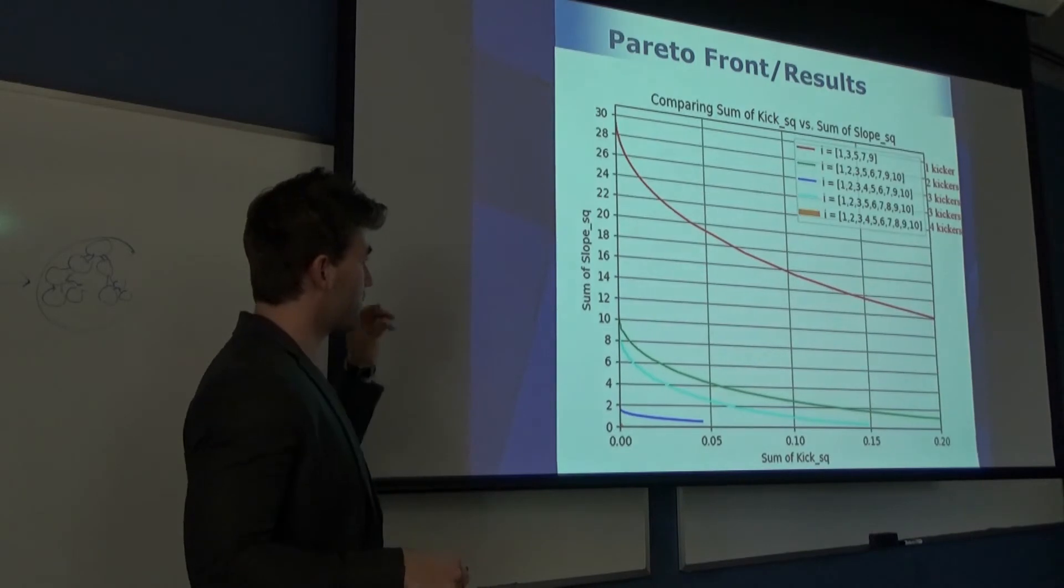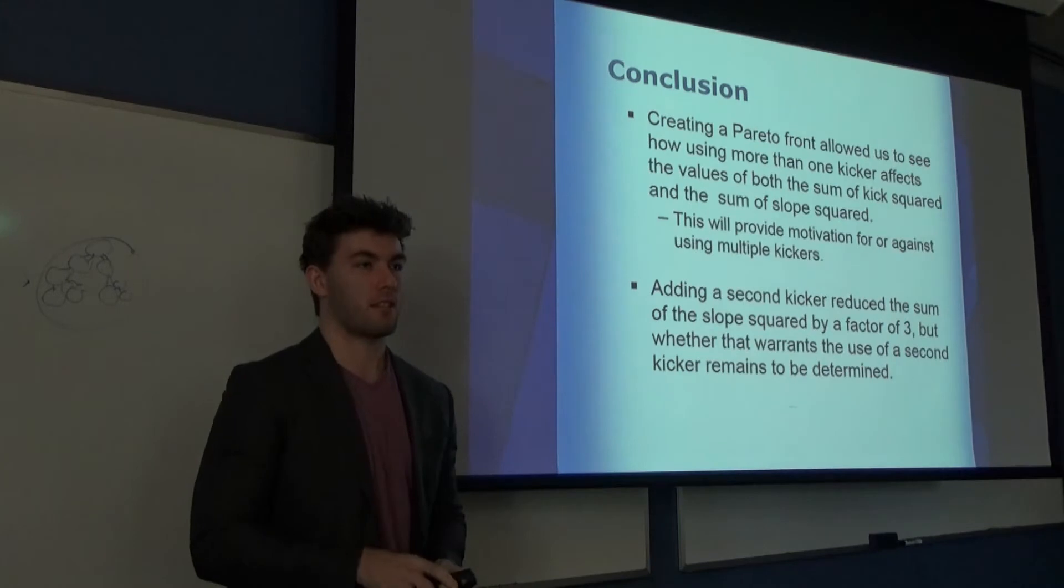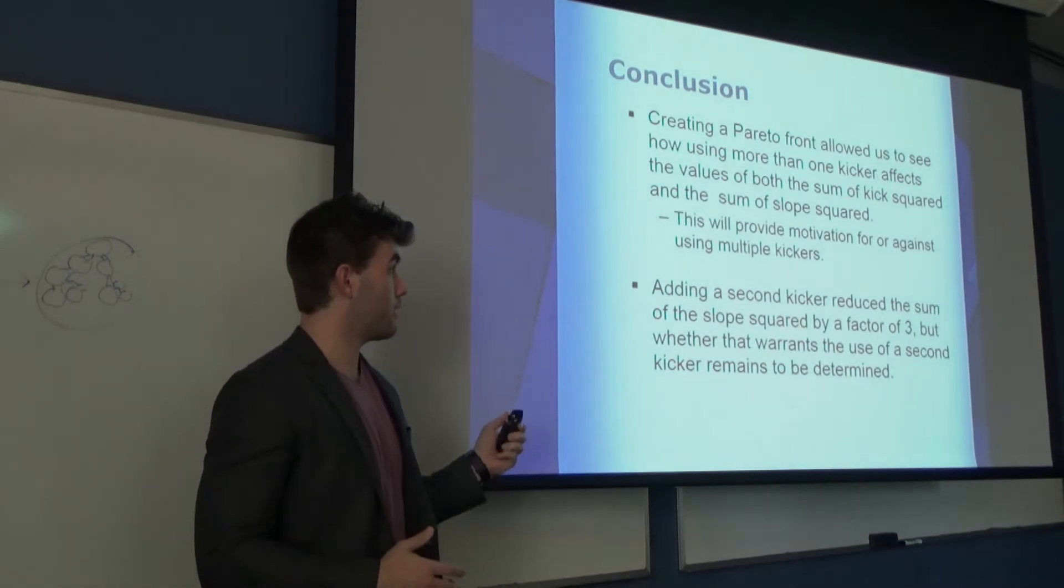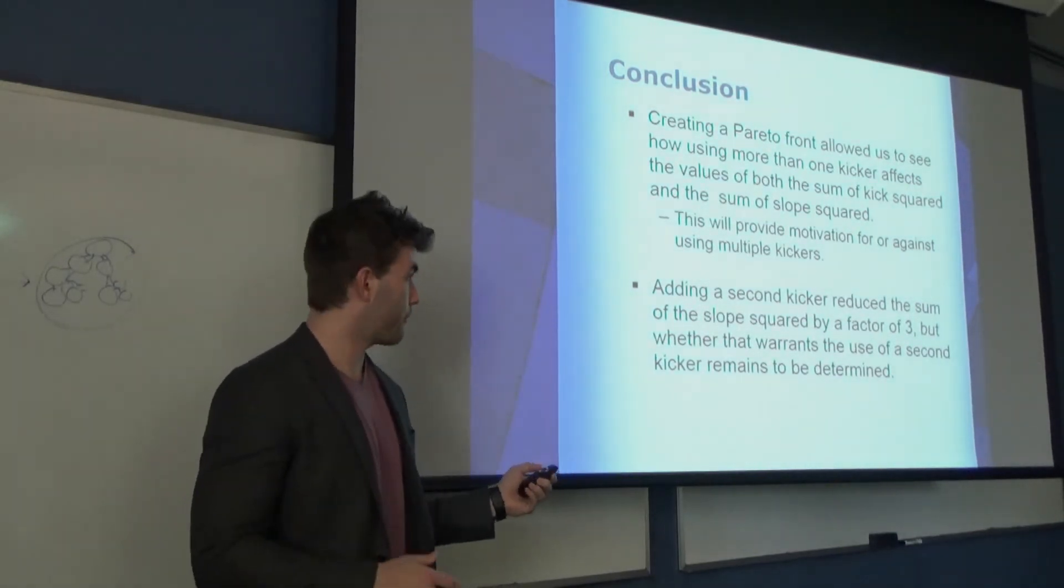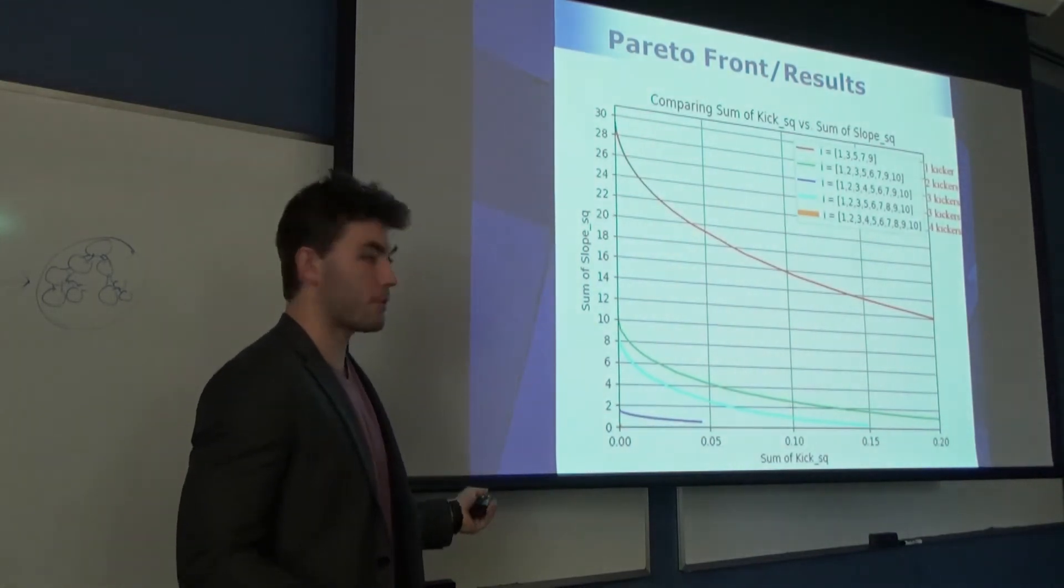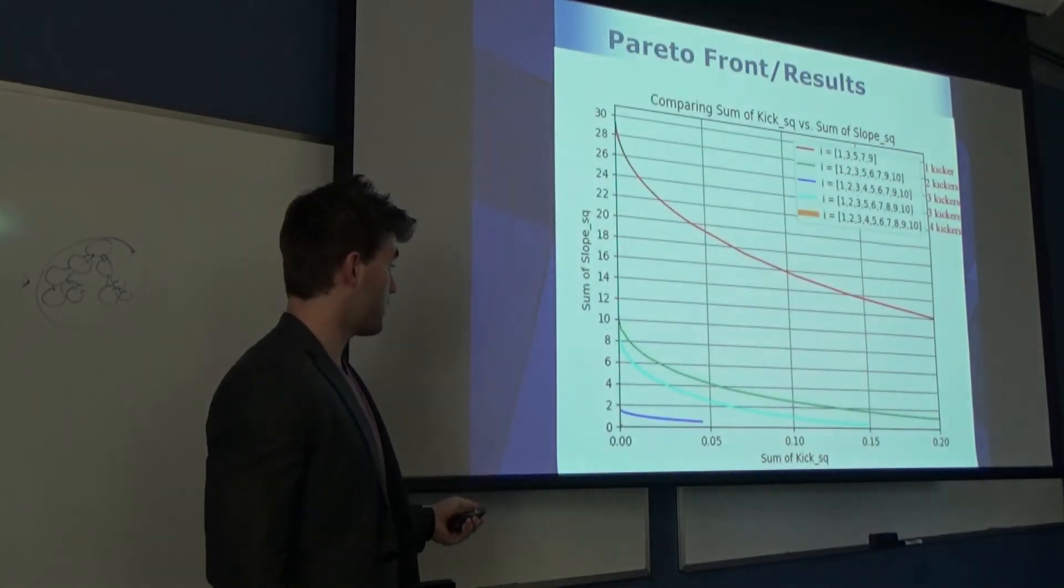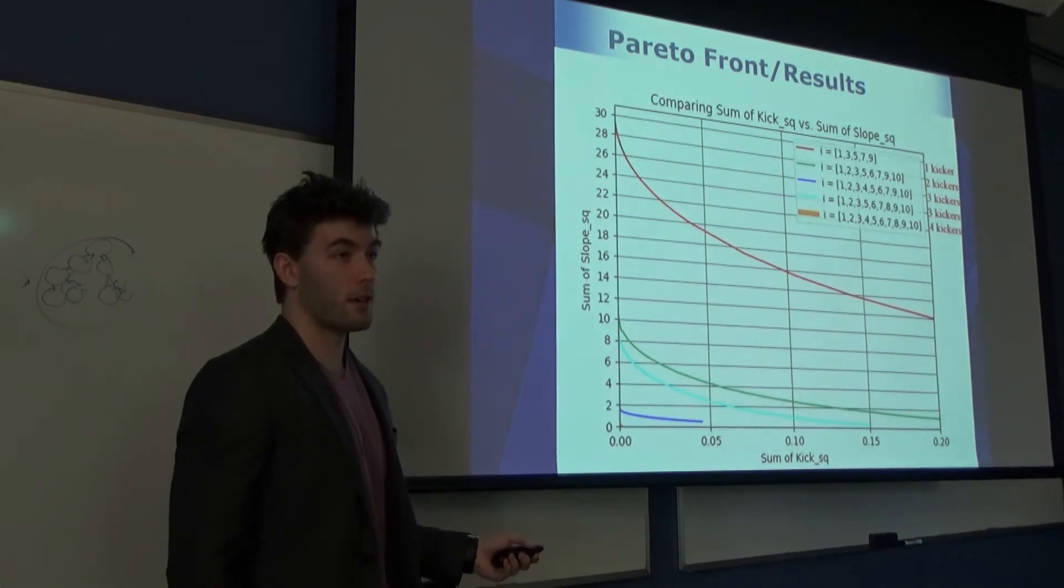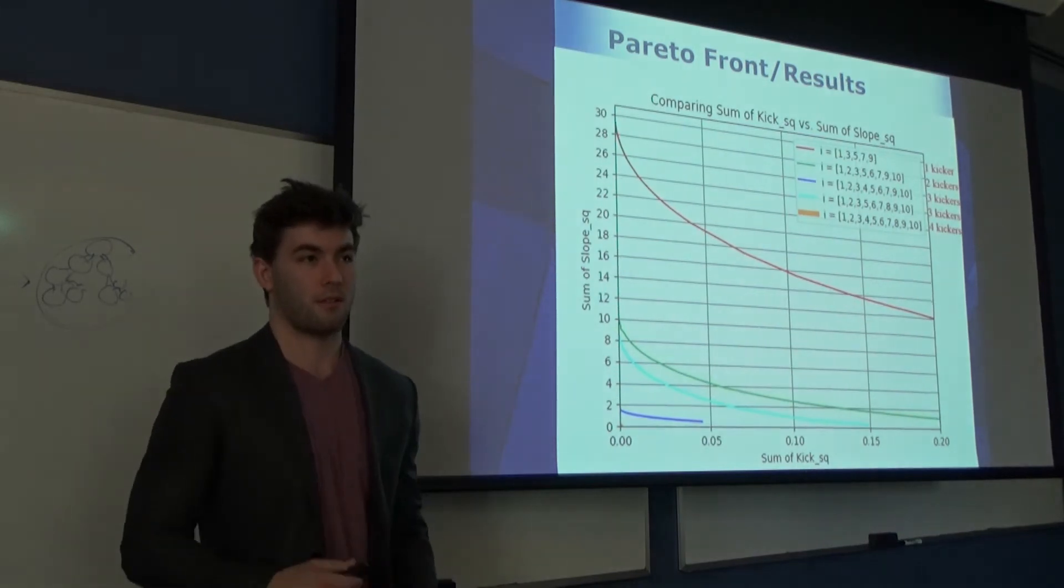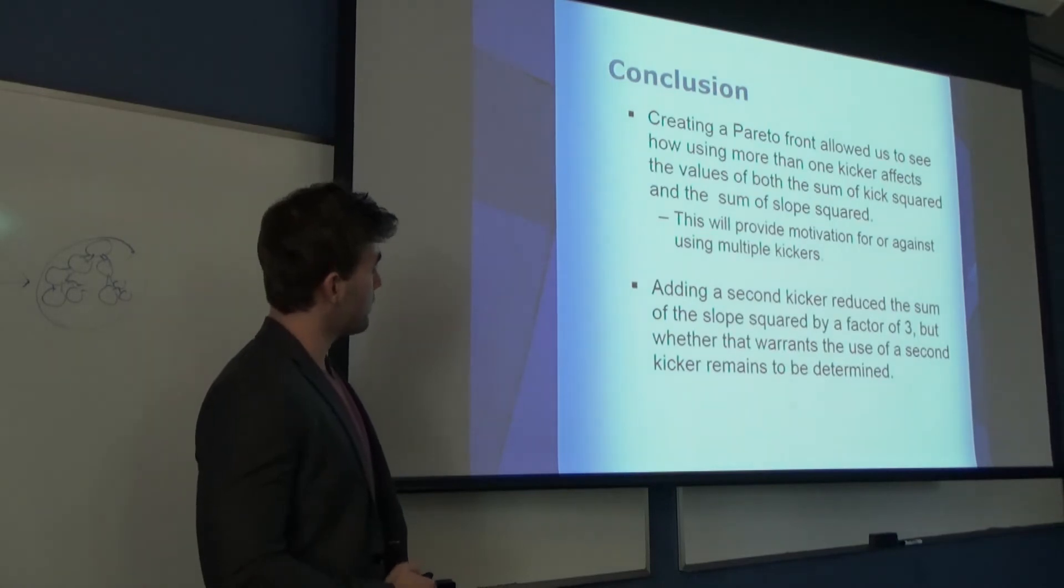In conclusion, using this Pareto front lets us see just exactly how much better using one kicker versus two versus three will get us closer to the zero kick, zero slope at intermediate bunches. It provides a visual representation of saying we do this much better at introducing a second kicker. Let's invest in it. It's worth investing in. Adding a second kicker did reduce the sum of the slope squared by a factor of three. But there still needs to be a little bit of studying done to see if it's still worth the extra $100,000 to use the second kicker.